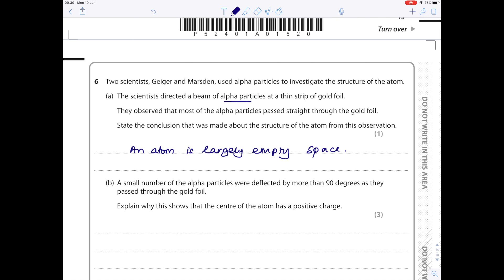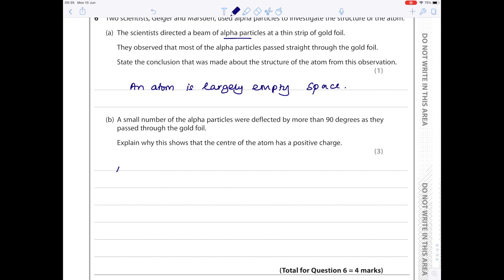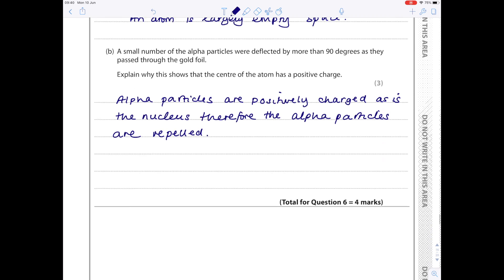A small number of alpha particles were deflected by more than 90 degrees as they passed through the gold foil. Explain why this shows that the center of the atom has a positive charge. Alpha particles are positively charged and are therefore repelled. Don't worry about how much space they give you to answer these questions. If you've made three good points, it doesn't matter how much space you occupy.